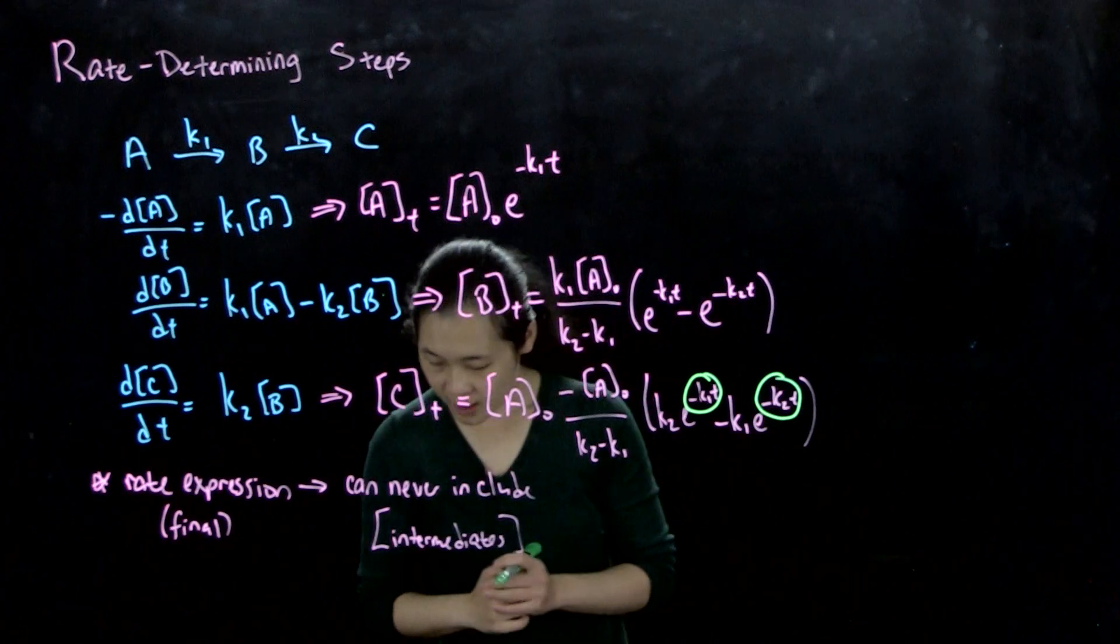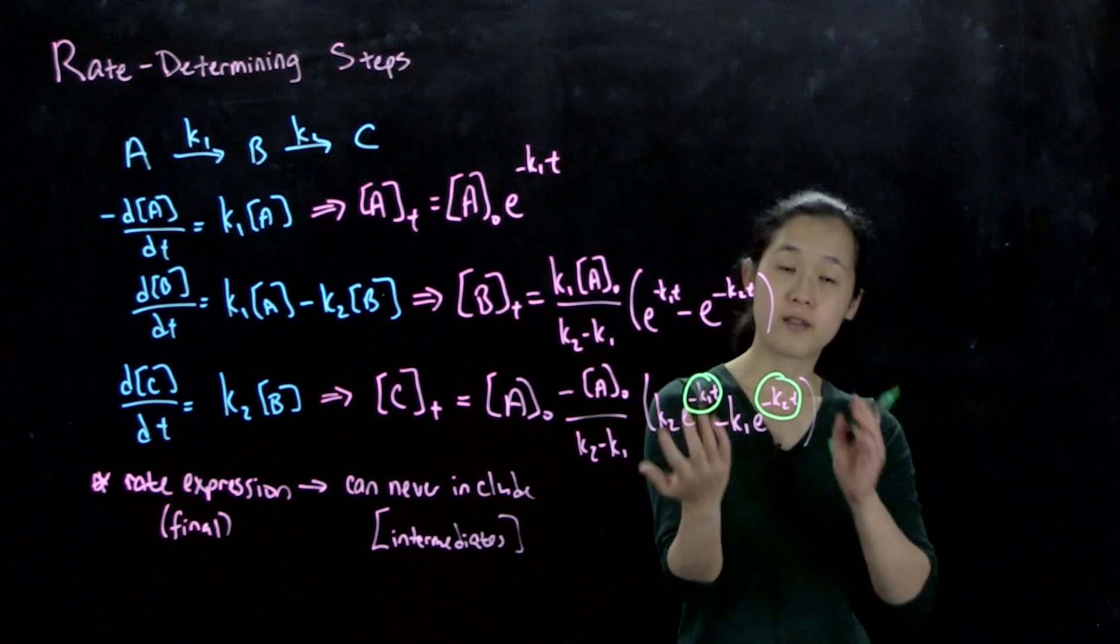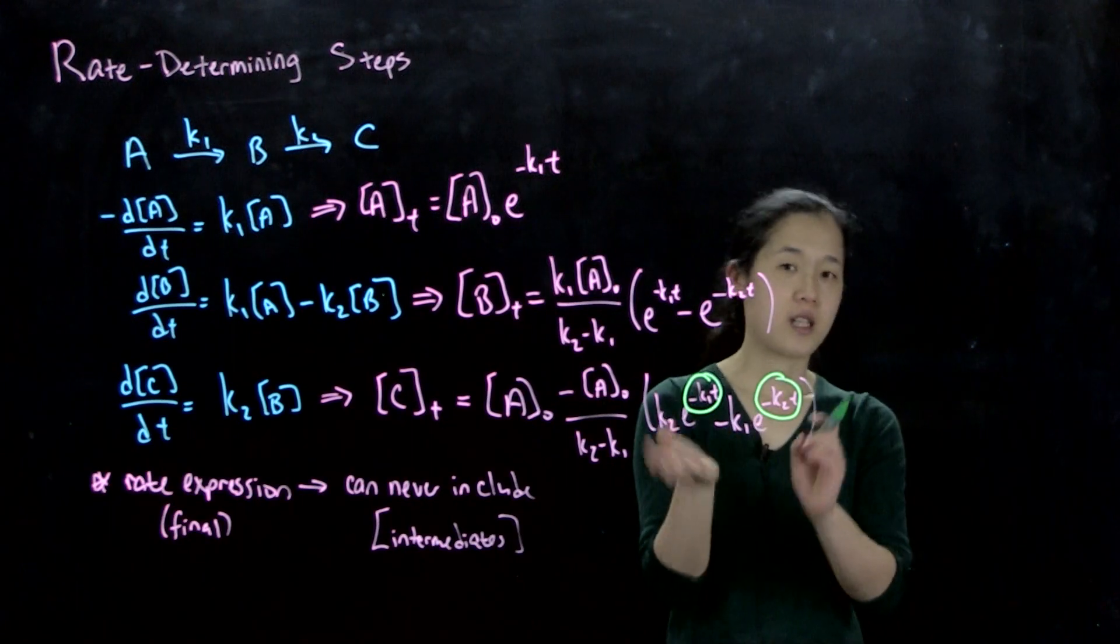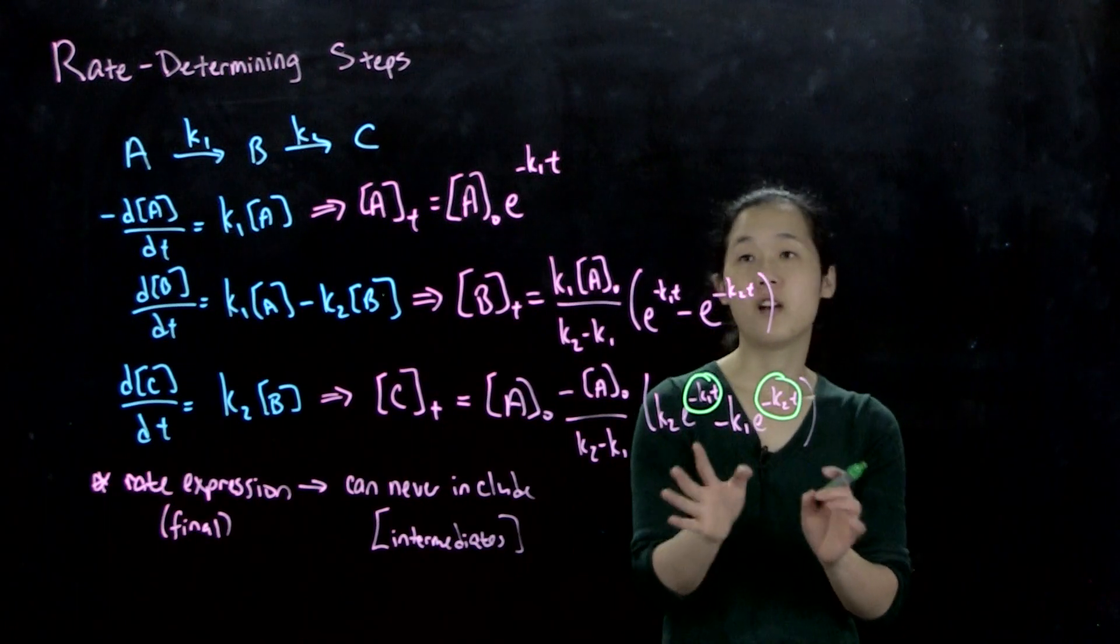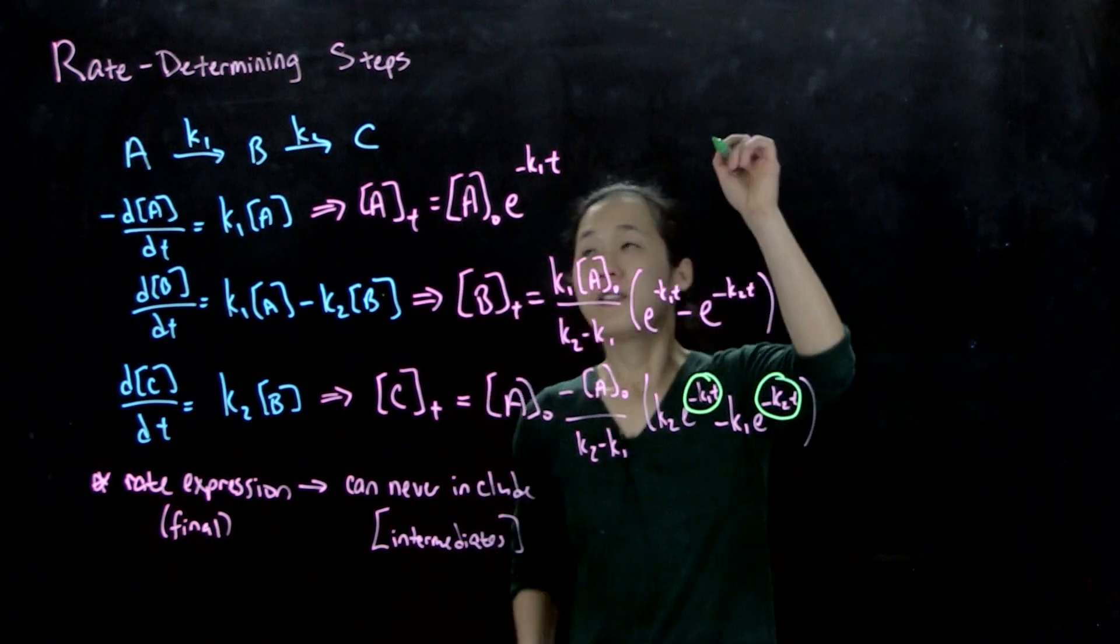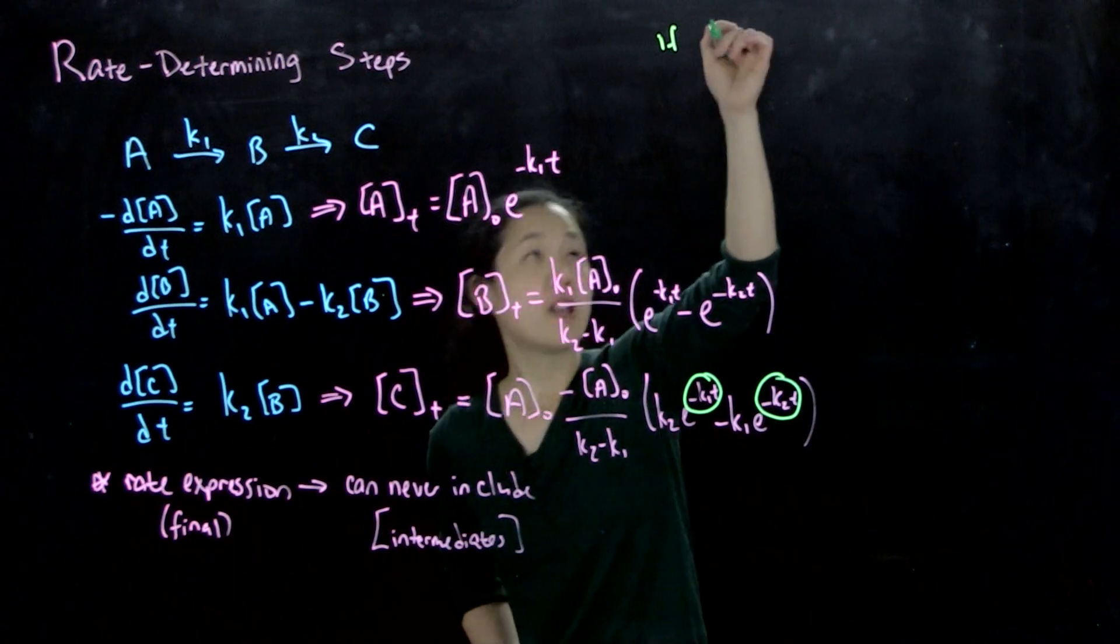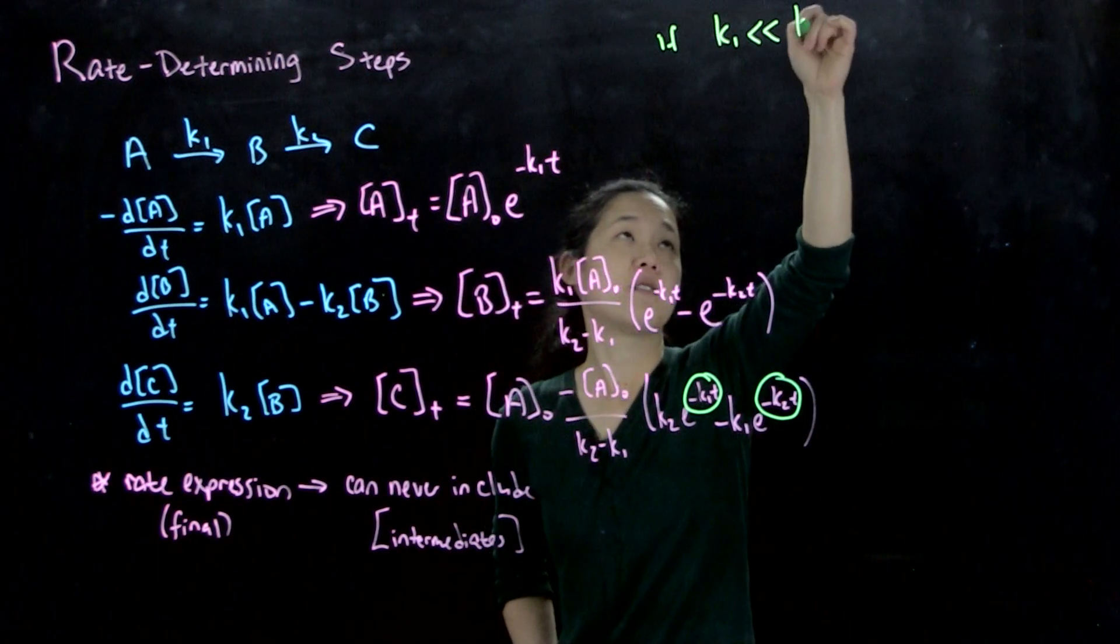But I do want to point out, what happens if we change the relative ratios of k1 and k2? So if, let's say for the first one, if k1 is much, much less than k2.